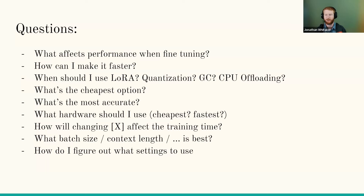What are the things we can tweak, and how does that affect memory usage, computation, speed, cost, and so on? If you've looked at Axolotl config files, you realize there are so many knobs to tweak and it can be tricky to get a mental model of what those different things will do.